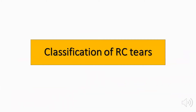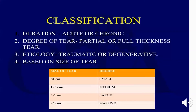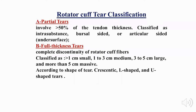Rotator cuff tears can be classified according to duration (acute or chronic), degree (partial or full thickness), etiology (traumatic or degenerative), and size. Partial tears involve about 50% of the tendon thickness and are classified as intrasubstance, bursal-sided, or articular-sided. Full thickness tears are classified as small (less than 1 cm), medium (1–3 cm), large (3–5 cm), and massive (more than 5 cm).